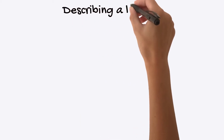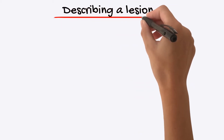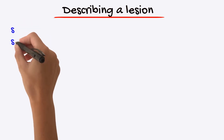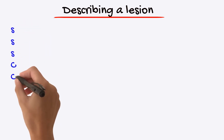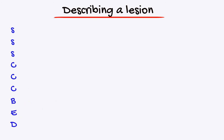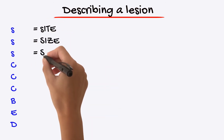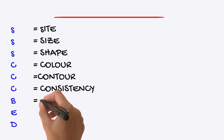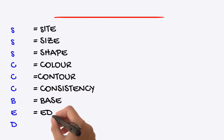When describing a lesion or ulcer, it is important to do so in a systematic manner. Use the mnemonic SSS CCC BED: Site, Size, Shape; Colour, Contour, Consistency; Base, Edge, Discharge. This is a great way to remember how to systematically describe a lesion.